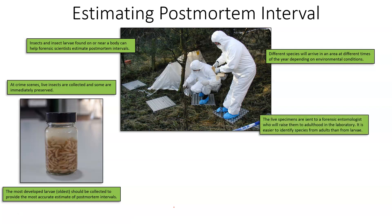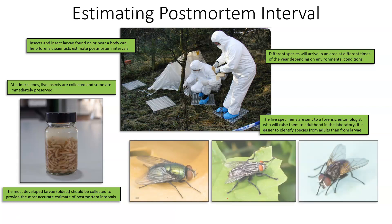We're going to immediately preserve some specimens, but we're also going to keep some of them alive and send those live larvae to a lab — specifically forensic entomology labs — because we want to raise them to adulthood. It's easier for forensic entomologists to accurately identify the species of adult flies over larvae, as all larvae of many different fly species look very, very similar, if not identical.